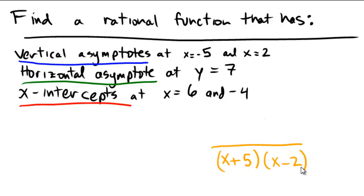So notice that if x equals 2, that's going to cause a 0 in the denominator, and if x equals negative 5, that causes a 0 in the denominator. So that's going to make sure that I satisfy the condition of the vertical asymptotes. I'll underline those in blue so you can see that that's where I'm controlling my vertical asymptotes.